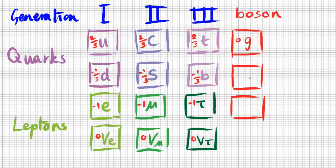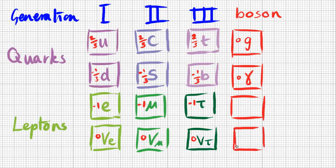By far the most influential fundamental force on your everyday life is carried by the gauge boson called the photon — that is the boson for the electromagnetic force. Then the last force we understand is the weak nuclear force, and it is carried by the neutral particle Z and the two charged particles W+ and W-, so there are actually three carriers in total there.